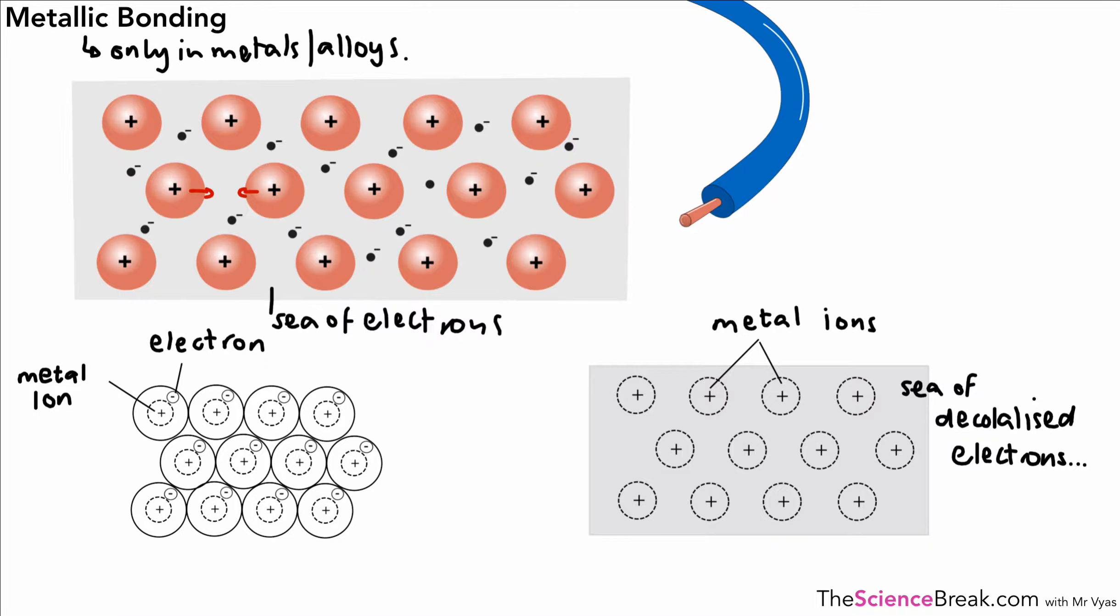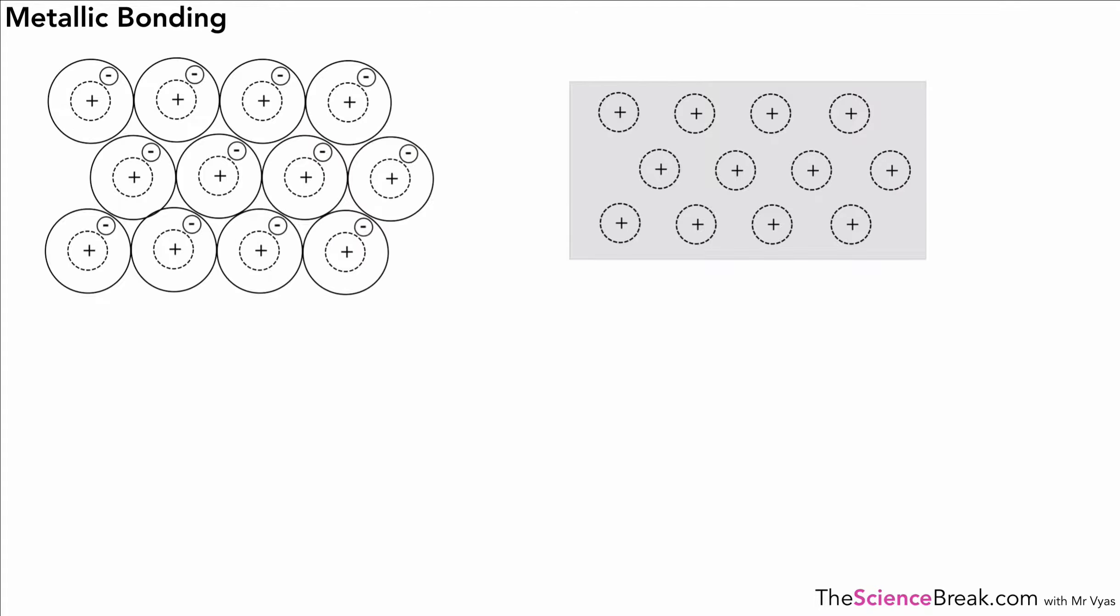So what if we had to describe this metallic bond or metallic bonding? Well, we could list it as a set of bullet points, and they would go a little something like this. So the first thing we haven't mentioned yet, but it's probably important to mention, is the fact that metals have a giant lattice structure.